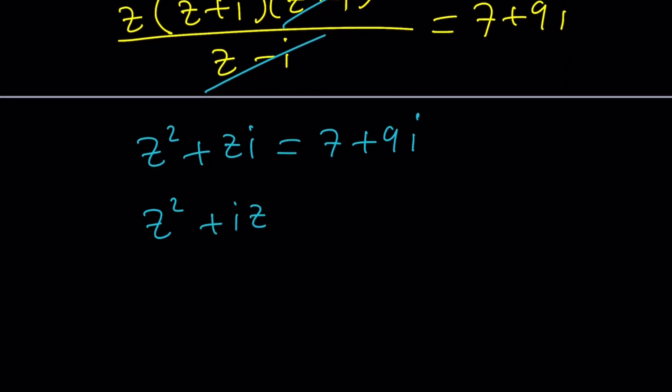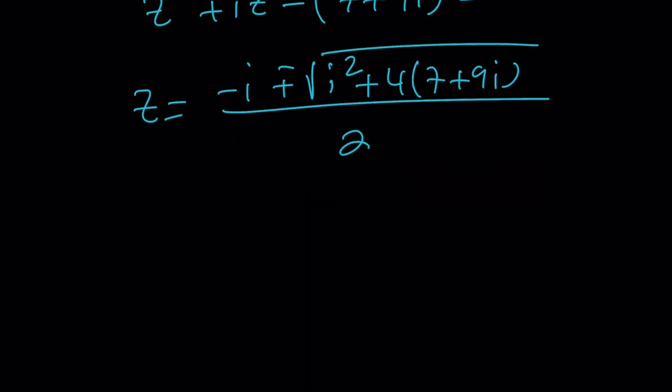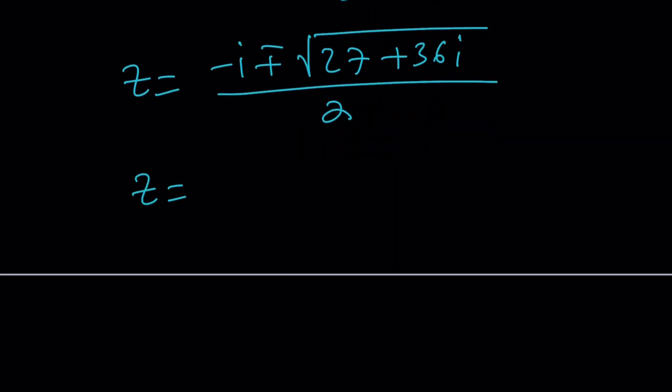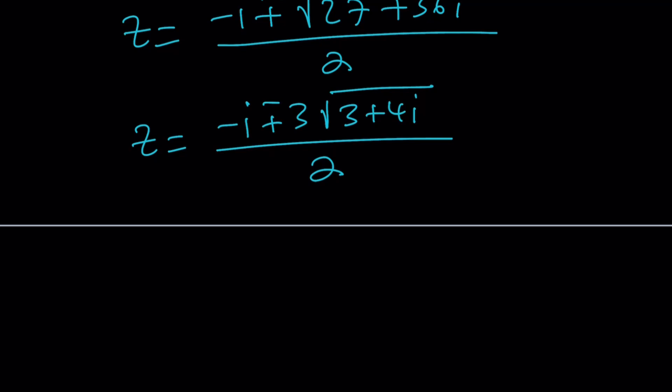z²+iz-7+9i equals 0. From here, z is going to be -b plus minus the square root of b². By the way, i² is -1 minus 4 times this. The challenge about this method is finding the square root of a complex number, which might be somewhat complicated. This is -1, 28-1 is 27. Then 4 times 9 is 36. You can take out a 9. -i plus minus 3 times, and when you take out a 9, you end up with 3+4i. Uh-oh. Does not look good. You just need to square root 3+4i. That's a different story. Obviously, you can do it. There's a couple different ways to do it.